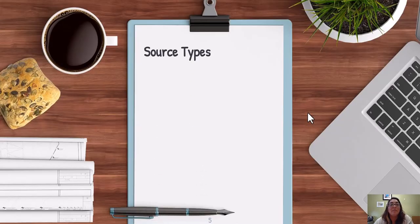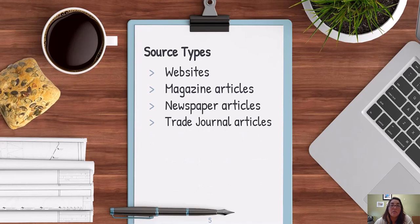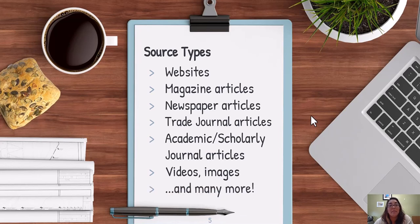Now let me go over some source types. Number one is websites — that's what we mentioned with Google searching. Magazine articles are another source type, as are newspaper articles, trade journal articles, and academic or scholarly journal articles, also known as peer-reviewed articles. There are also videos, images, tweets, Facebook posts, blogs, dissertations, and conference papers — many more source types than I can list here, but you'll see some examples in the databases.